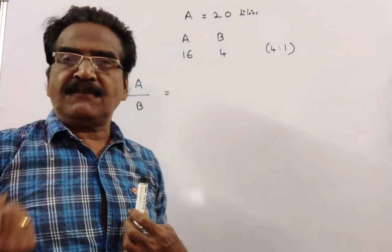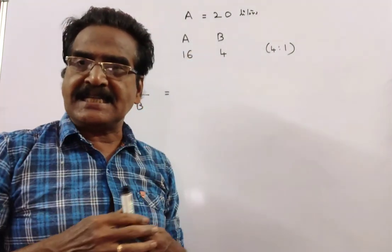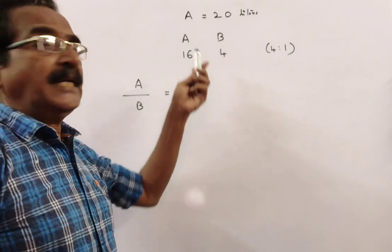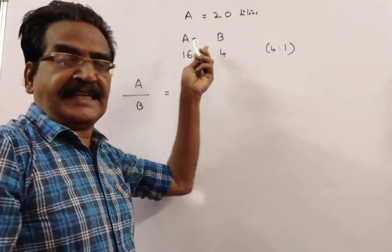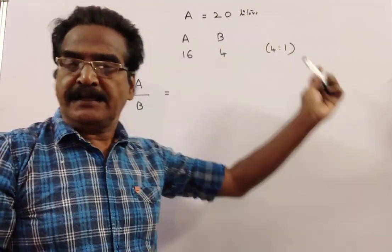Then 4 liters of liquid A is taken out and 4 liters of liquid B is added. Then the bottle contains 16 liters of liquid A and 4 liters of liquid B, that is 4 to 1 ratio.